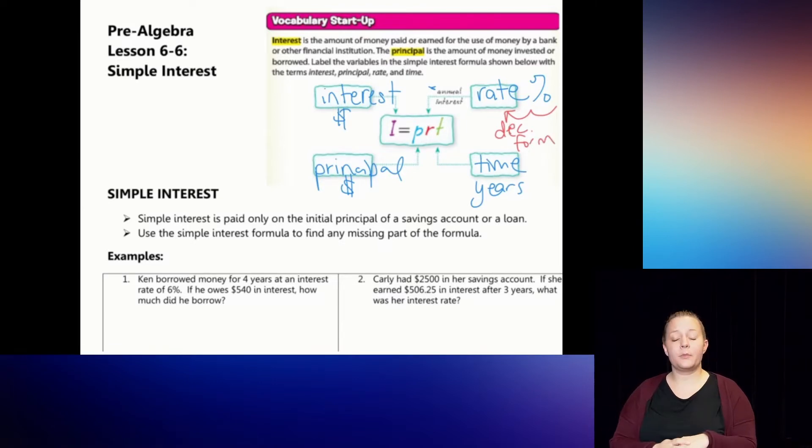So interest is equal to the principal times the rate times the time. You should know from way back in Chapter 1 and even from last year, that when your variables are connected, that means multiply. All right, let's see this in action.